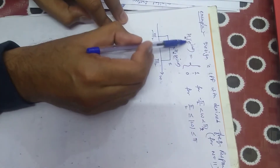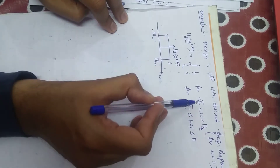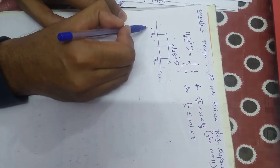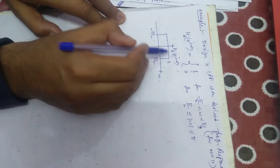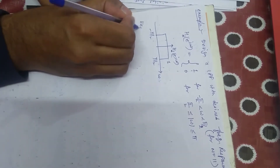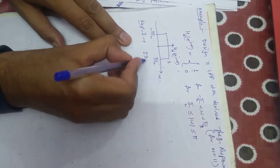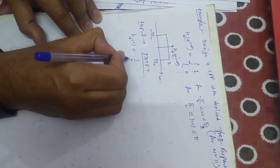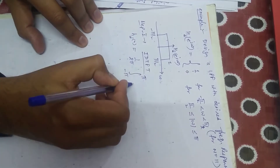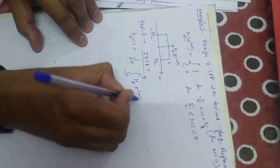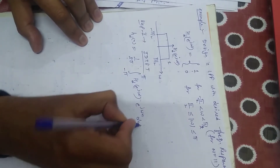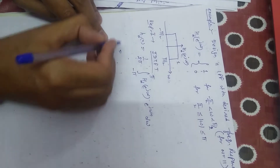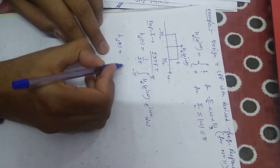We have 11 samples and the desired response H_d(e^jω) is given as 1 for the frequency range minus π/2 to π/2, and 0 otherwise. It may be represented in graphical form: from minus π/2 to plus π/2, the magnitude is 1. The first step is to take the IDTFT: h_d(n) = (1/2π) ∫_{-π}^{π} H_d(e^jω) e^{jωn} dω. I will not integrate completely as it will be lengthy.